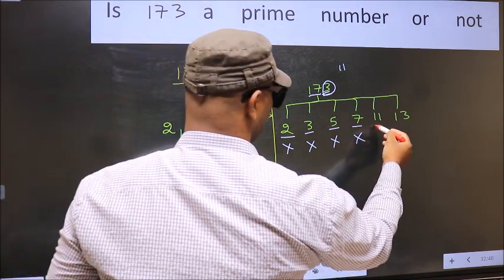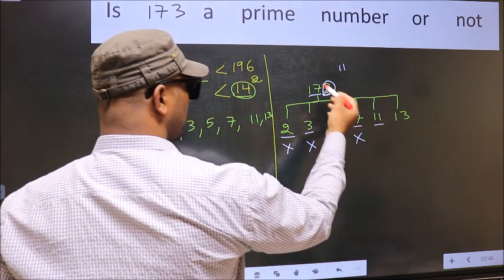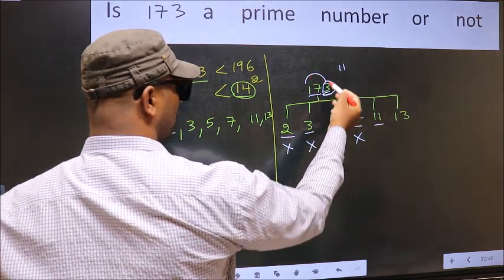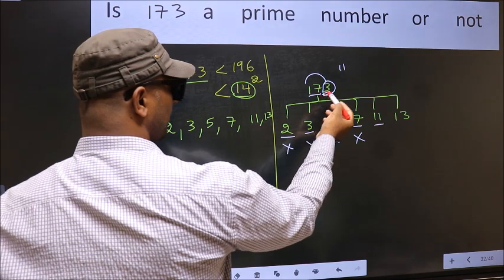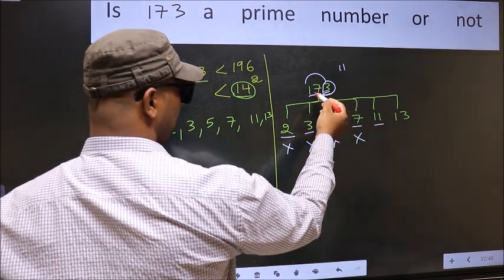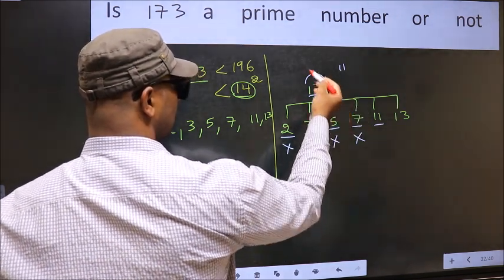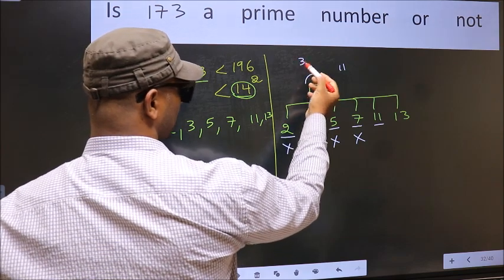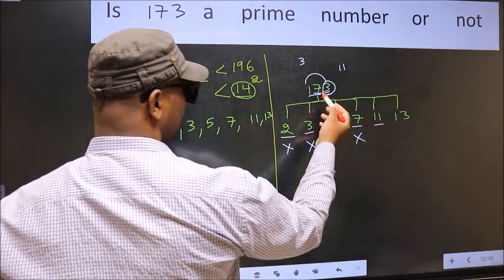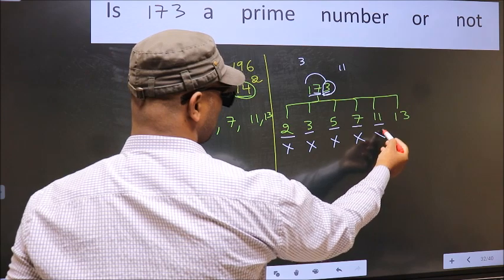Next, number 11. To check divisibility by 11, you add alternate numbers. 1 plus 3, 4. Subtract from this. 7 minus 4, 3. 3 is not divisible by 11. So, this number is also not divisible by 11.